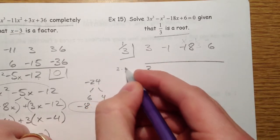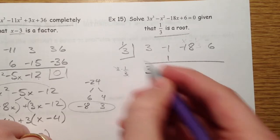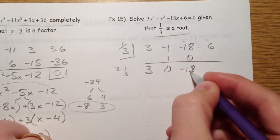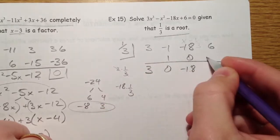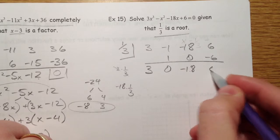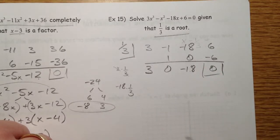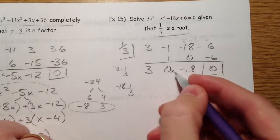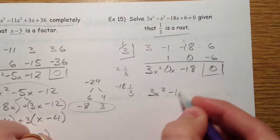3 times 1 third is 1. You get 0. 0 times 1 third. And I add negative 18 times 1 third. It's really dividing by 3. So I get negative 6. And that's important because they told us it was a root. So it better be a root. So, negative 18. x, x squared. So, 3x squared minus 18.